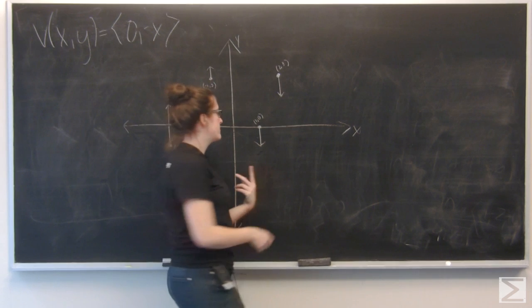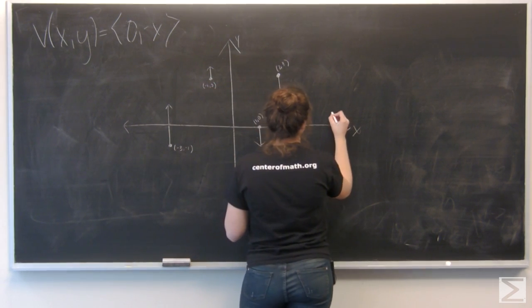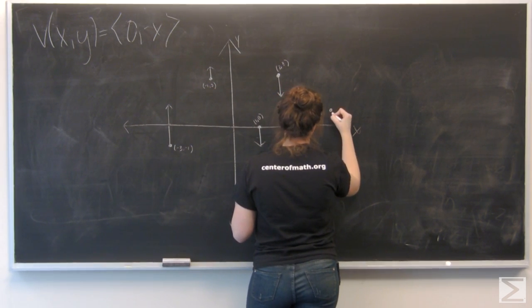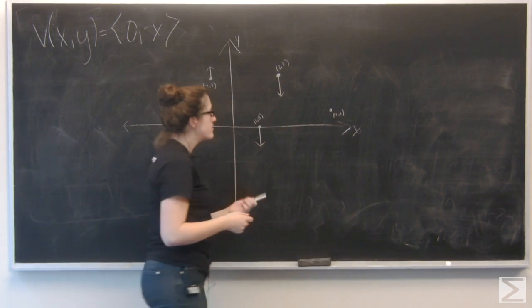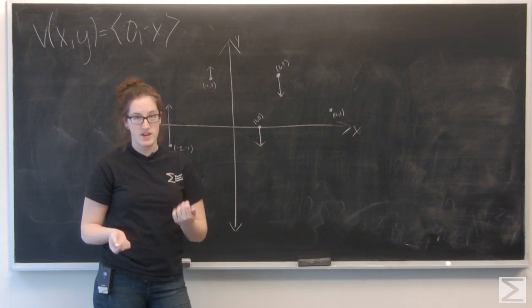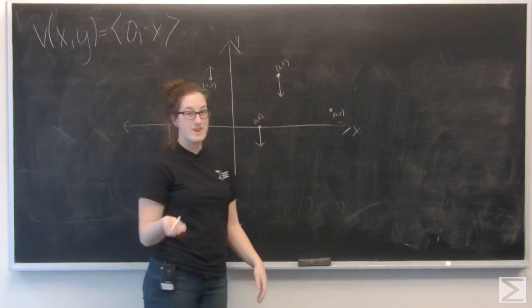Let's try 4, 1. Well, my j component here is going to be the opposite of the x value, so negative 4 and i still 0.